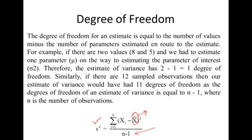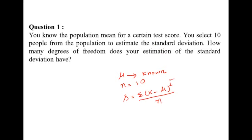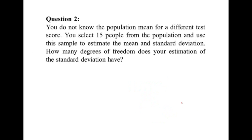Example: you know the population mean for a certain test score — mean is known. You select 10 people to estimate the standard deviation. Since sigma uses x minus mu and mu is known, no parameter needs to be estimated, so degree of freedom is n = 10. Another question: you do not know the population mean, you select 15 people. To estimate standard deviation when mean is unknown, one parameter is estimated, so degree of freedom is n minus 1 = 15 minus 1 = 14.